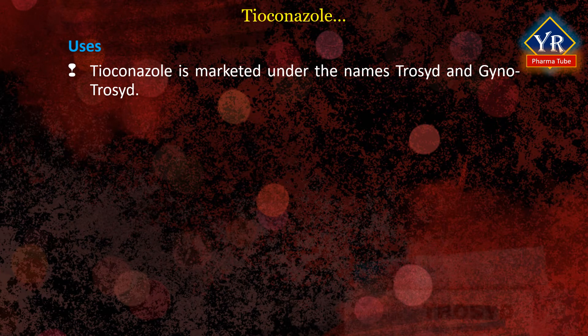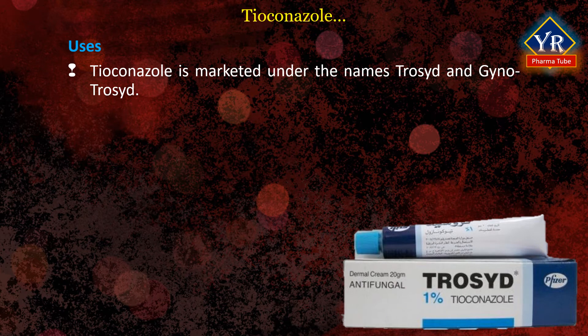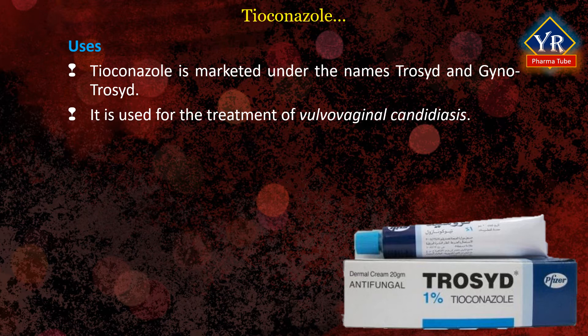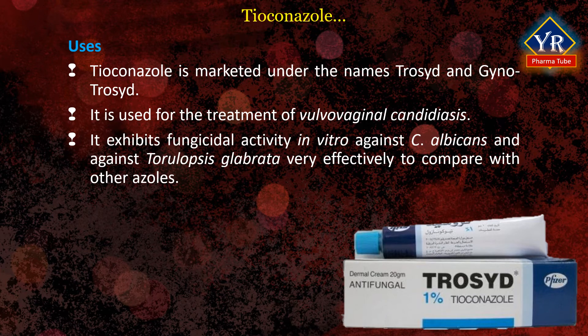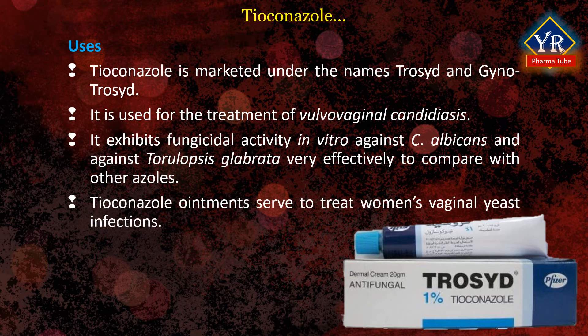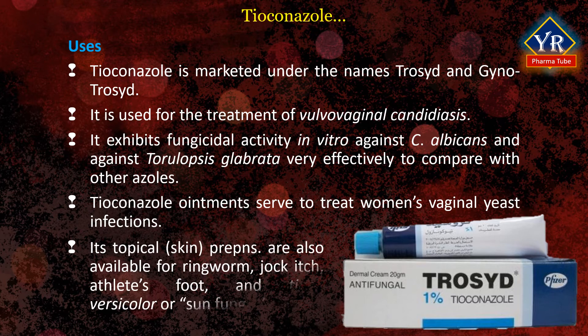Tioconazole is marketed under the brand names Trosyd and Gyno-Trosyd. It is an antifungal medication of the imidazole class used to treat infections caused by a fungus or yeast. It is used for the treatment of vulvovaginal candidiasis. It exhibits fungicidal activity in vitro against Candida albicans, other species of the genus Candida, and against Torulopsis glabrata very effectively compared with other azoles. Tioconazole ointments serve to treat women's vaginal yeast infections. Topical preparations are also available for ringworm, jock itch, athlete's foot, and tinea versicolor. It does not work for bacterial or viral infections.